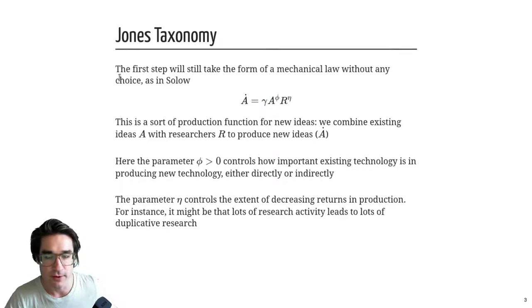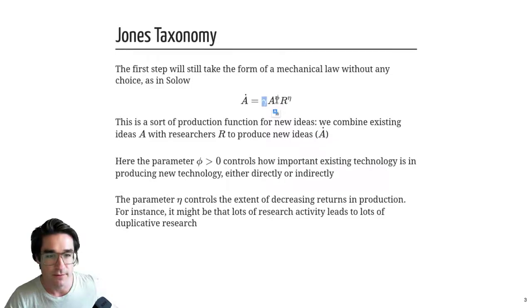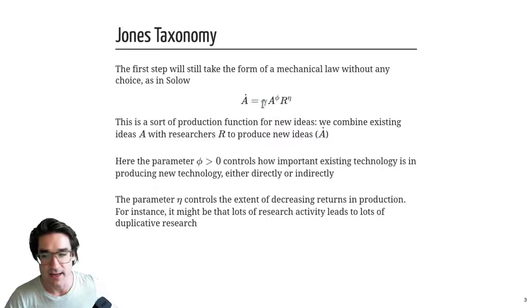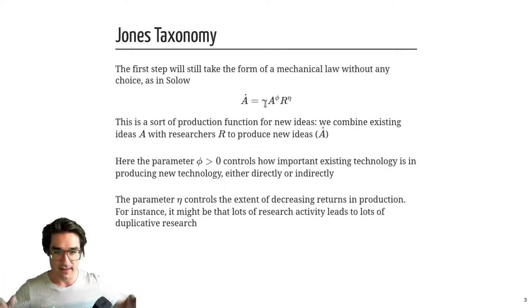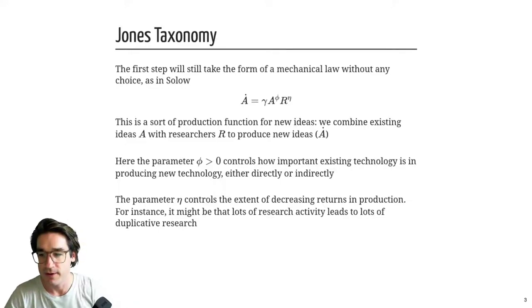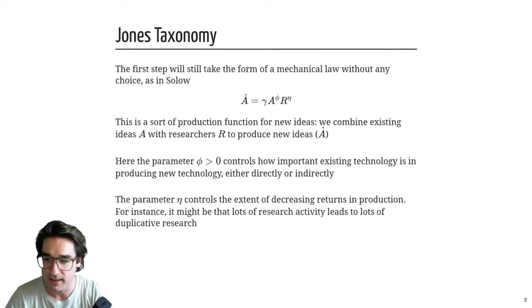We're going to be introducing some new Greek letters. γ (gamma) is just a constant controlling the overall level — how productive things are in terms of producing ideas. That's not going to be changing over time.